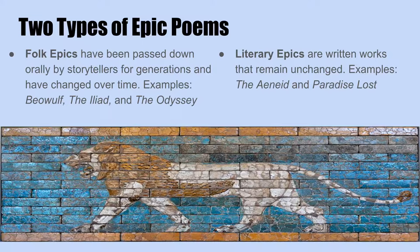There are two types of epic poems. Folk epics have been passed down orally by storytellers for generations and have changed over time. Examples of folk epics include Beowulf, the Iliad, and the Odyssey.